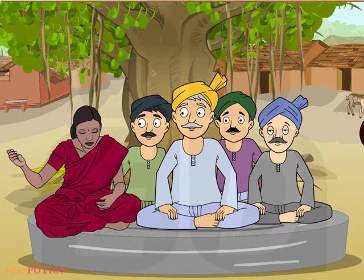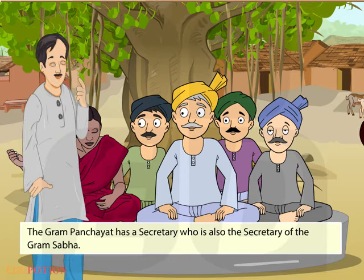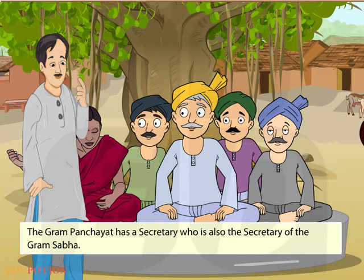A Gram Panchayat is elected for 5 years. The Gram Panchayat has a secretary who is also the secretary of the Gram Sabha. The secretary is appointed by the government. The secretary is responsible for calling the meeting of the Gram Sabha and Gram Panchayat and keeping a record of the proceedings.